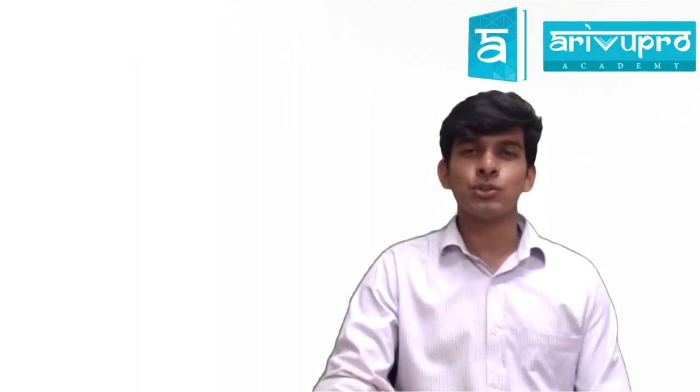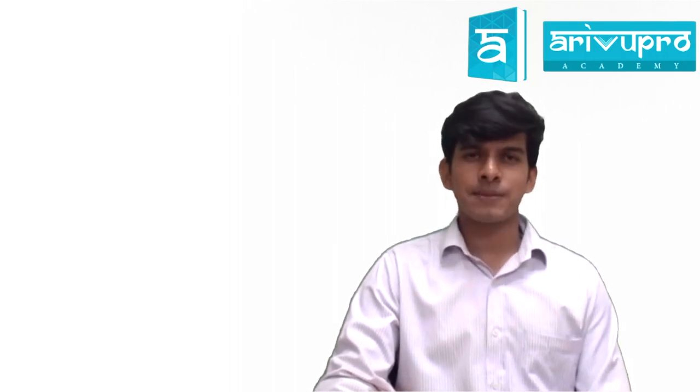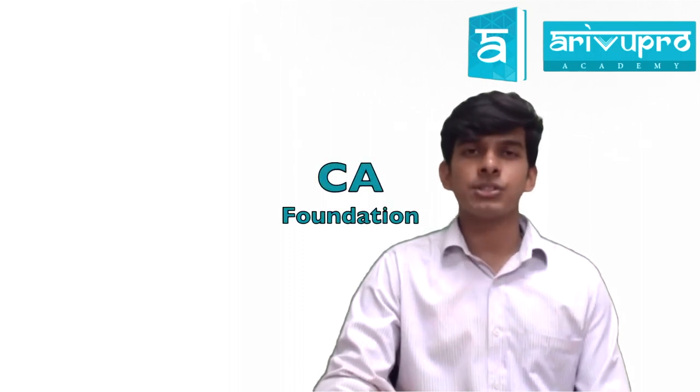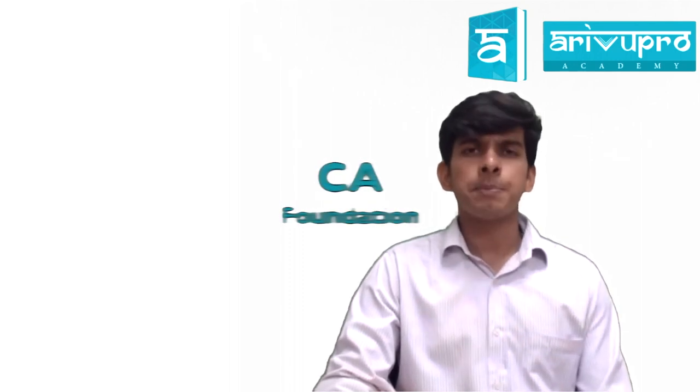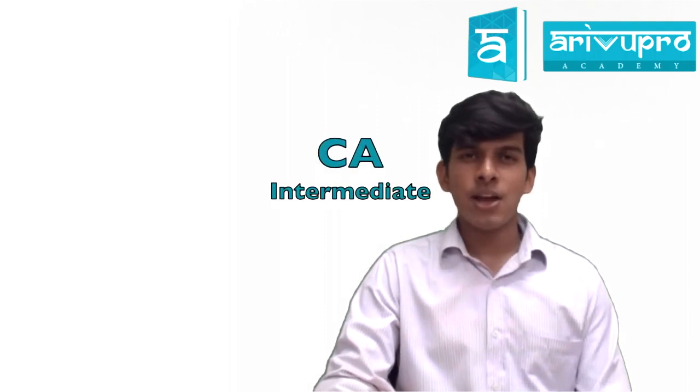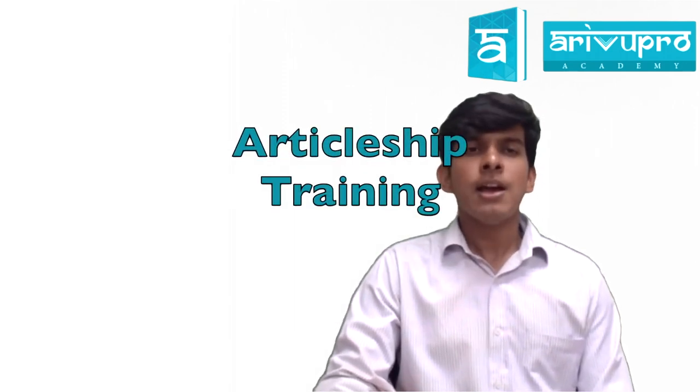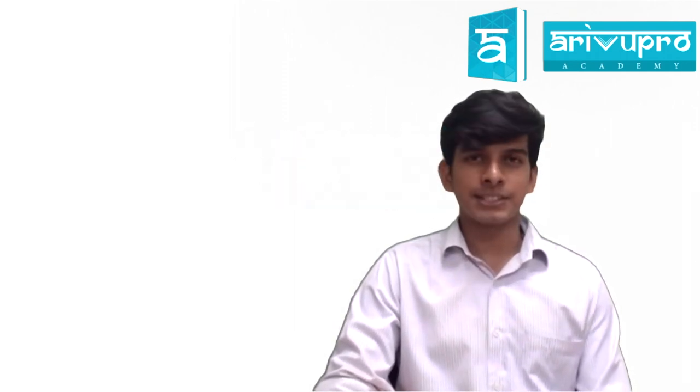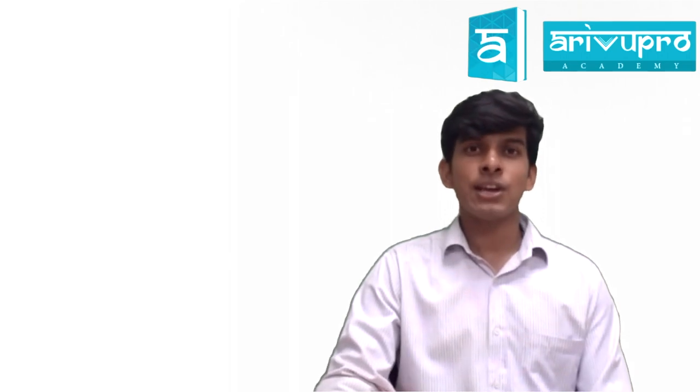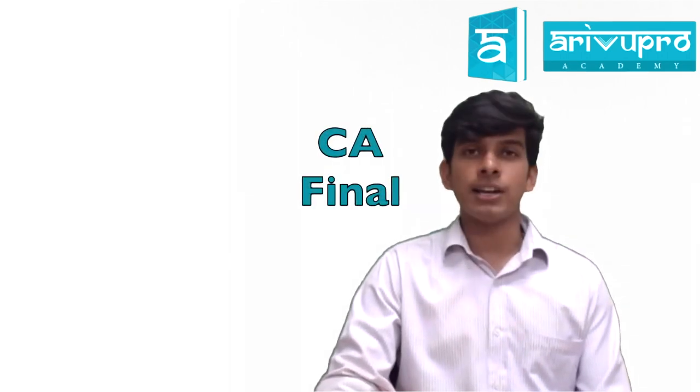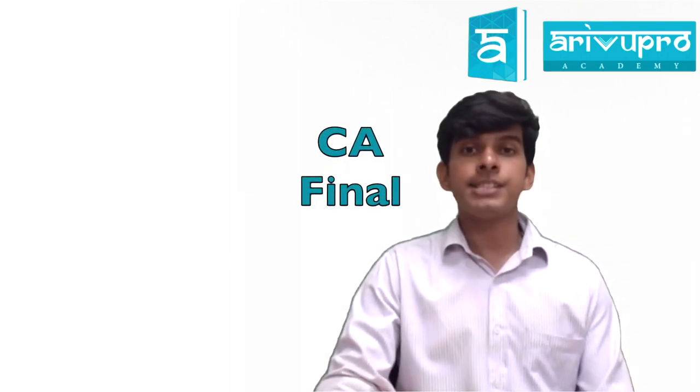The vast course of Chartered Accountants is divided into 4 steps: CA Foundation which has 4 papers in it, then comes CA Intermediate which has 8 papers, then we have Articleship Training which is of 3 years, and last but not the least, we have CA Final which has 8 papers.